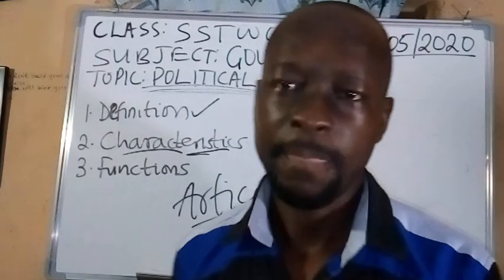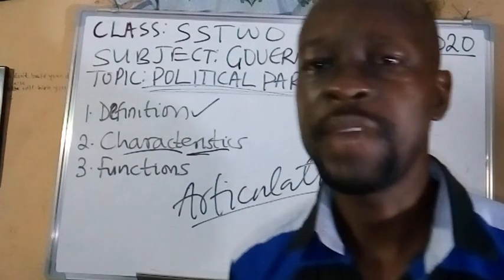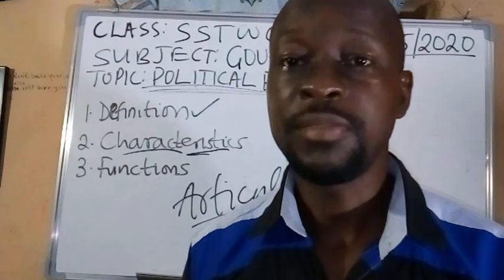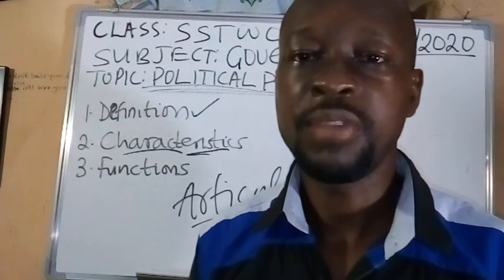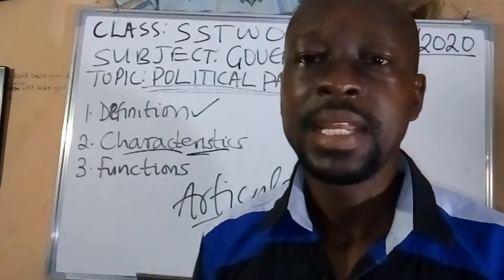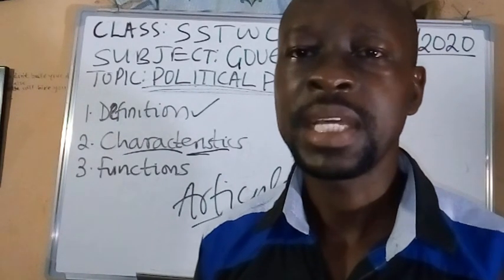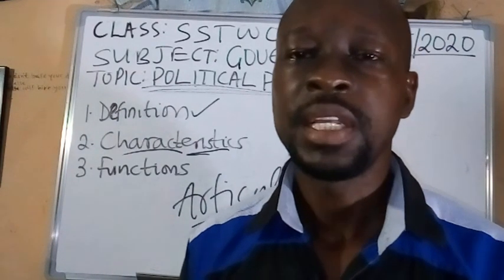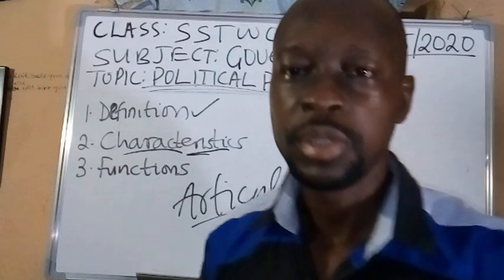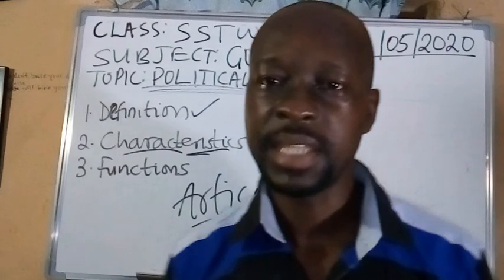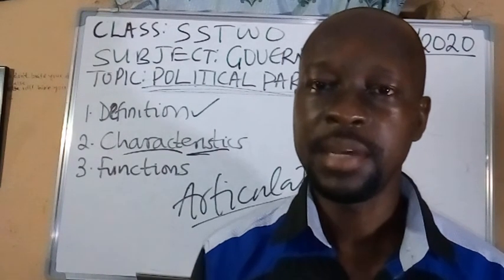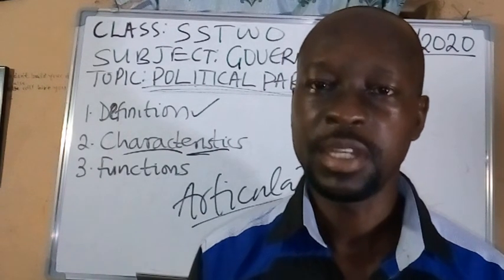Finally, a political party plays the role of agenda setting — setting the agenda for the government or for society. Political parties help the government understand what they are supposed to do, create the agenda, and make sure that government is pushed to pursue the right agenda.